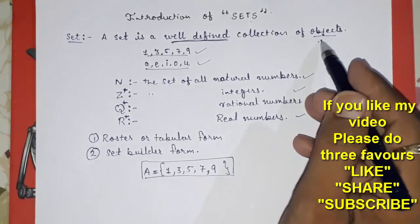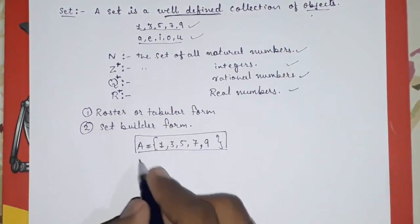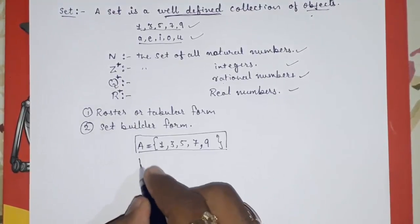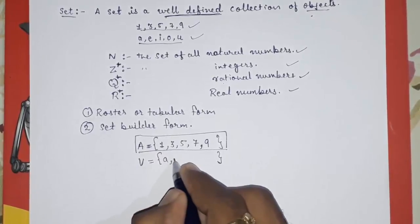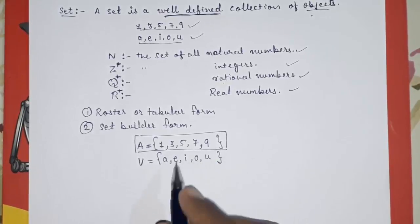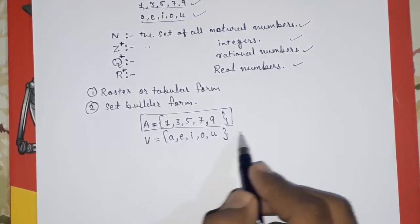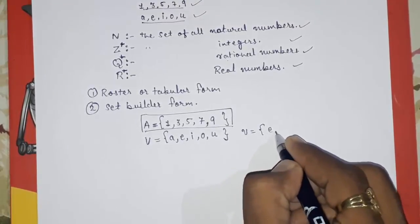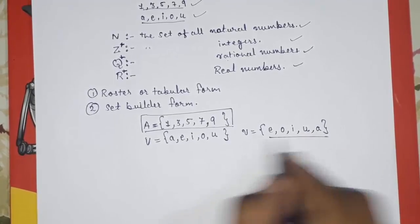The elements inside the braces are also called objects or members — all are synonyms. For vowels, we can give it the name V, so V = {A, E, I, O, U}. Two important points: first, order is not important. You can also write V = {E, O, I, U, A} — both are correct.